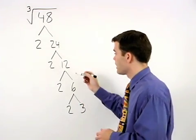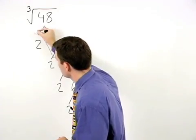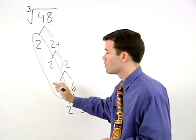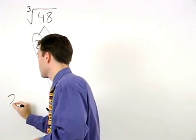And here you'll notice that we have a group of three twos, so a two will come out of the cube root.